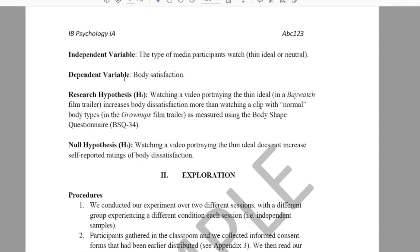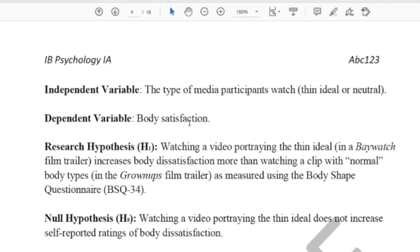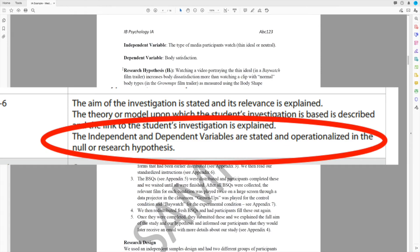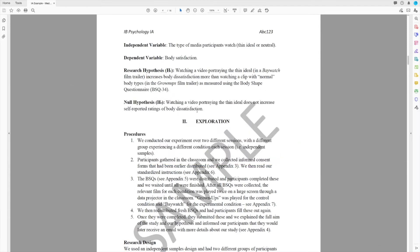To show your operational definitions, I recommend writing your IV and your DV clearly in the introduction. And then the rubric states that you must have your operational definitions either in your research or your null hypothesis. Now, it makes more sense to put it in your research hypothesis and keep your null hypothesis pretty simple.